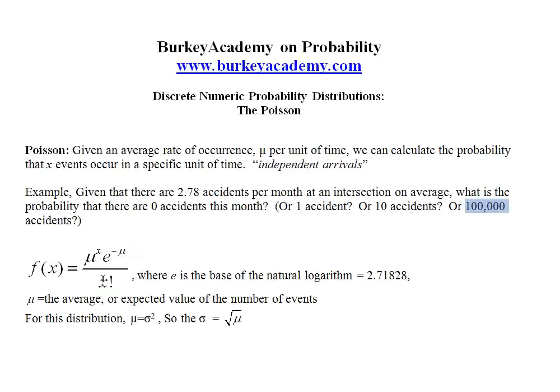And factorial is just the number times one less times one less until you get to one, except for there's a couple of special cases like zero and one. Basically what x factorial calculates is how many different ways you can rearrange something into different orders. So again mu is this average and that's the only thing we need to know to work this formula.